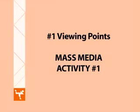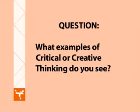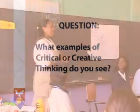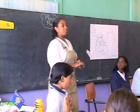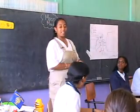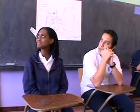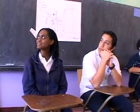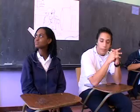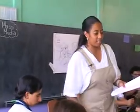Number one: Viewing Points. Mass Media Activity Number One. Video Segment Number One. What examples of critical or creative thinking do you see? We are going to be talking about mass media, communication, TV, and others. I'm going to give you this paper — please don't look at it yet.